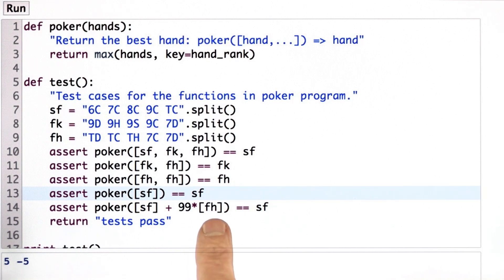So 99 times a one element list is a 99 element list all with the same element. And then we can add two lists together and that just says concatenate them. So this one element joins in with these 99 elements to make a 100 element list.